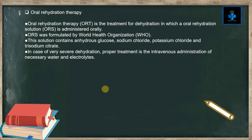Oral rehydration therapy is the treatment for dehydration in which an oral rehydration solution (ORS) is administered orally. ORS was formulated by the World Health Organization. This solution contains anhydrous glucose, sodium chloride, potassium chloride, and trisodium citrate. In case of very severe dehydration, proper treatment is the intravenous administration of necessary water and electrolytes.